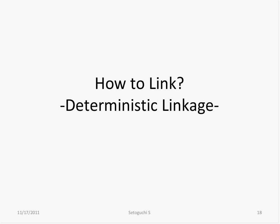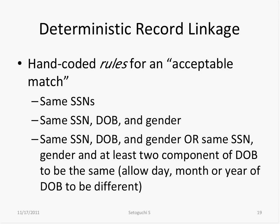Let's dive into linkage methods. I'm going to discuss two types: deterministic linkage and probabilistic linkage. Deterministic linkage uses hand-coded rules for acceptable matches. These rules could require the same social security number, or matching on social security number plus date of birth and gender. You can also allow partial matches — for example, one component of date of birth such as day, month, or year could differ and still be considered a match. You come up with the rules and apply them.